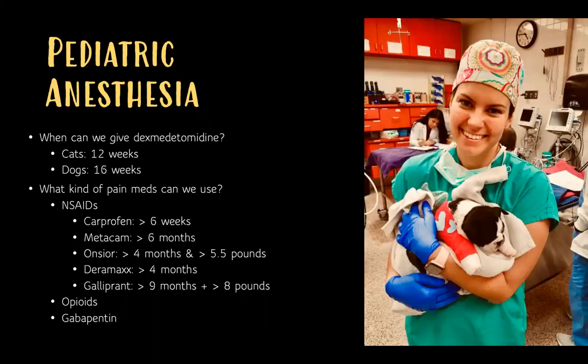Regarding dexmedetomidine: label dosing is for cats greater than 12 weeks and dogs greater than 16 weeks of age. For pain management, NSAIDs are excellent — carprofen is labeled for patients greater than six weeks. For a two-month-old puppy with a fracture, carprofen is a great choice providing significant analgesia. Don't forget opioids and gabapentin, both of which can be compounded into small enough doses for these tiny patients.